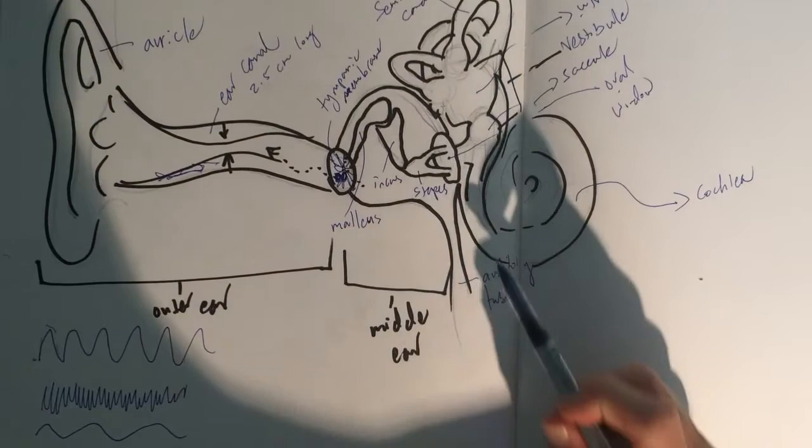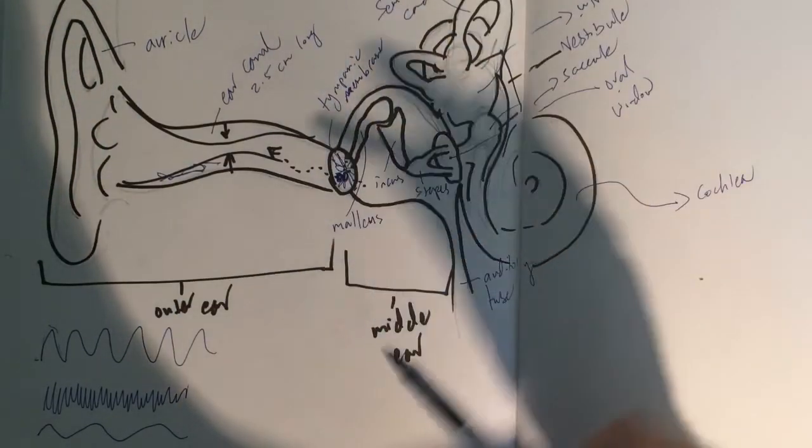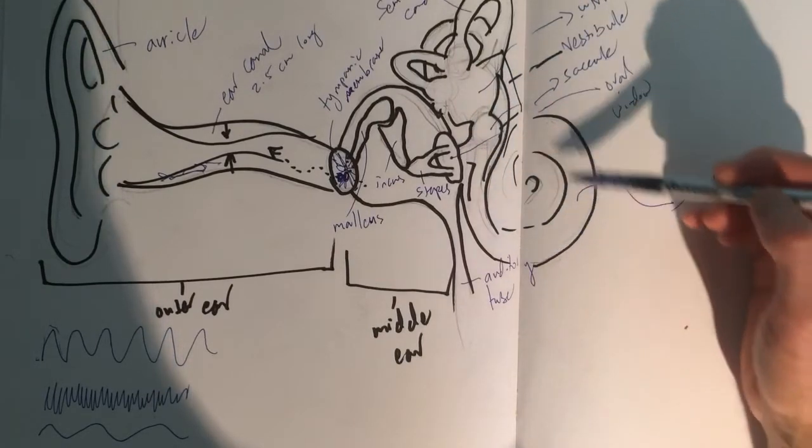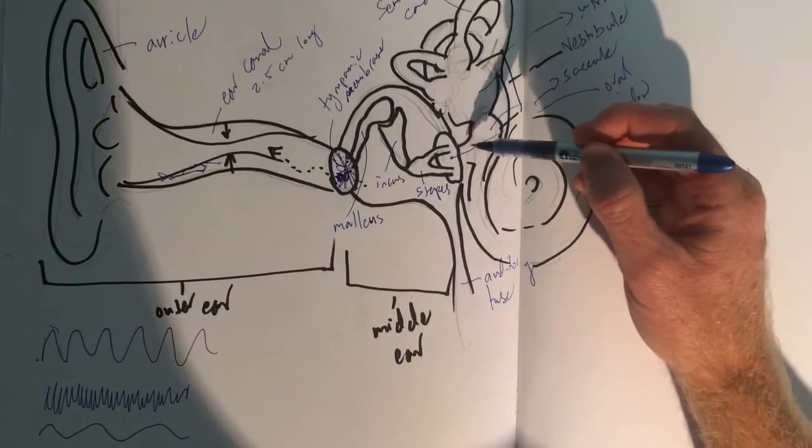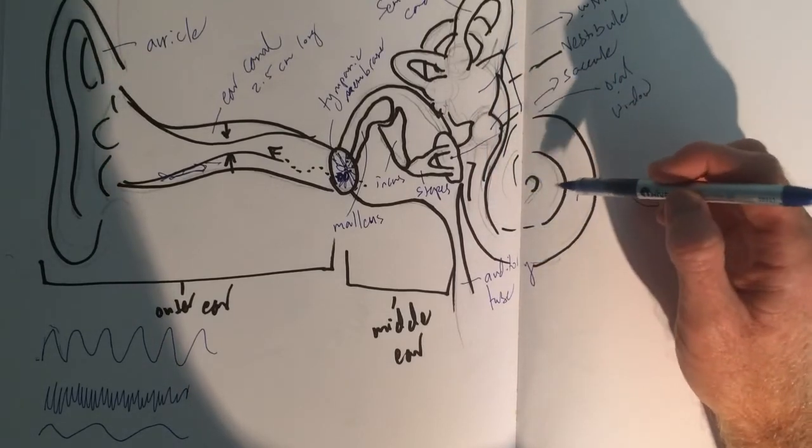Just to give you an idea of what happens, this stapes beats on the oval window like a plunger. That transmits those vibrations into the fluid that fills the inner ear. These sound waves are encoded into action potentials in the cochlea. We'll talk about how that happens a little later.